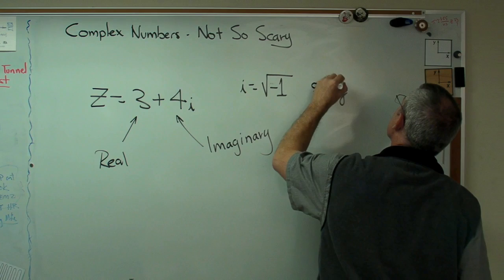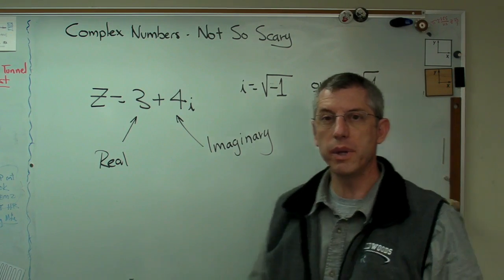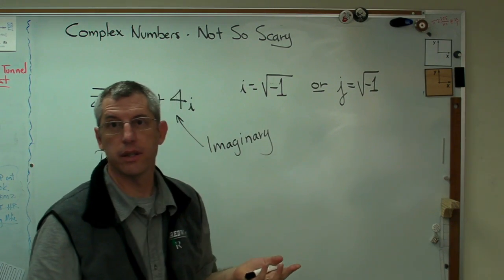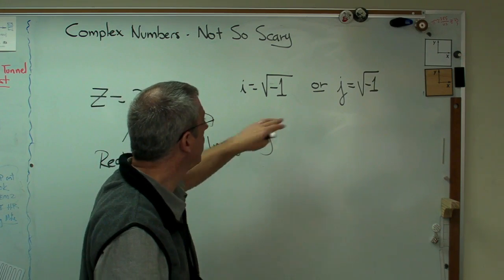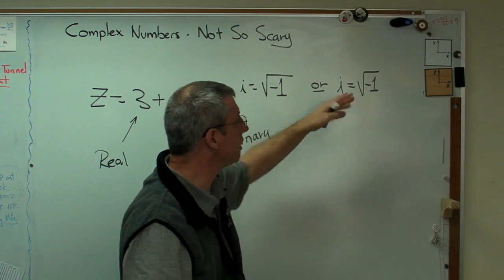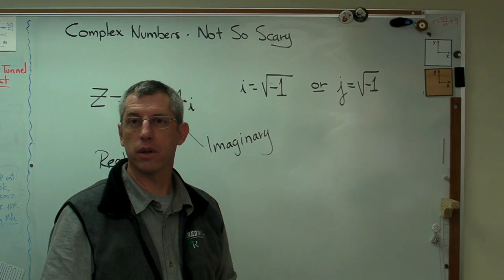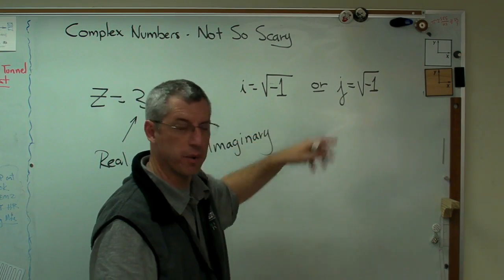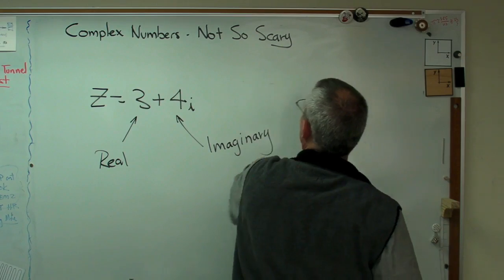Or, now the electrical engineers have a slightly different twist on this. They call j the square root of minus one. The reason they do that is that they use i for current. Well, there's only 26 letters in the alphabet. You're going to have to recycle some of them. So they didn't want to reassign current as something else. They wanted to keep current as i. So they used j as the square root of minus one. So in some technical works, you'll see i. Sometimes you'll see j. Some textbooks use j. That's okay. Don't worry about that. j and i are interchangeable.